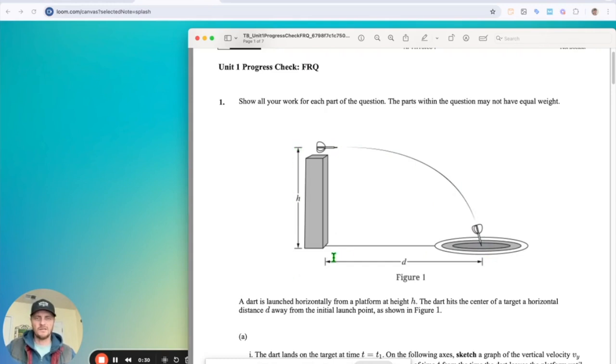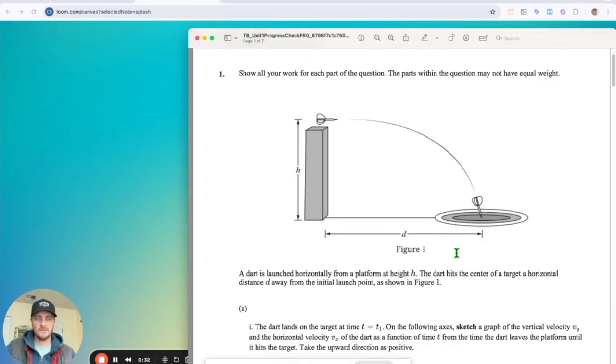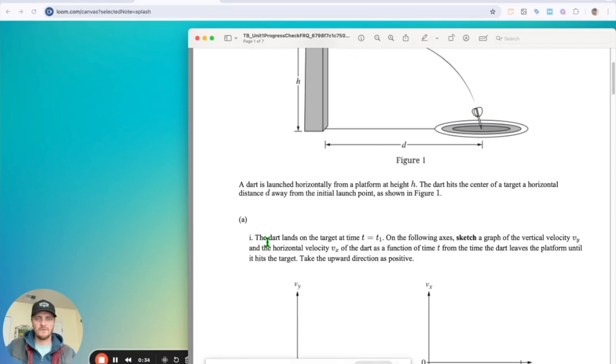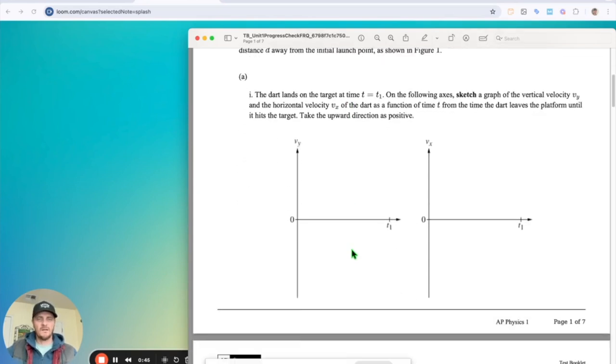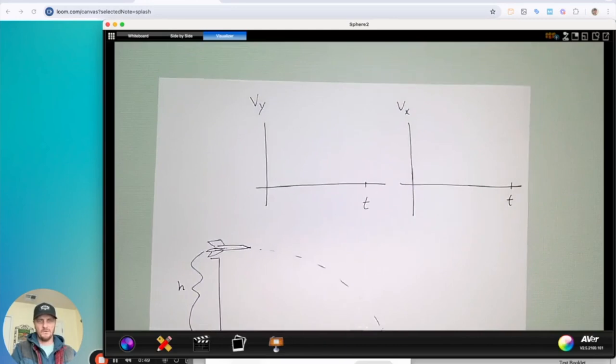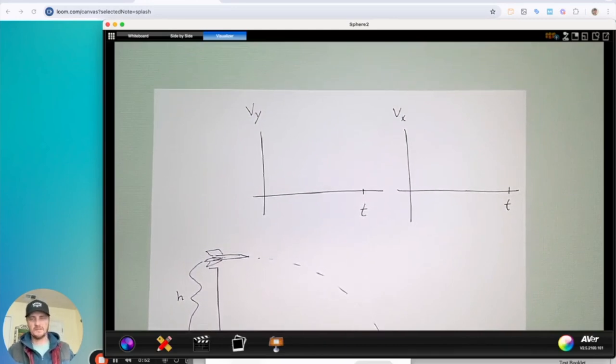So it starts from height H and goes to distance D. So what is it they're asking for? The dart lands on the target at time T. On the following axis, sketch a graph of the vertical velocity and the horizontal velocity of the dart as a function of time T.